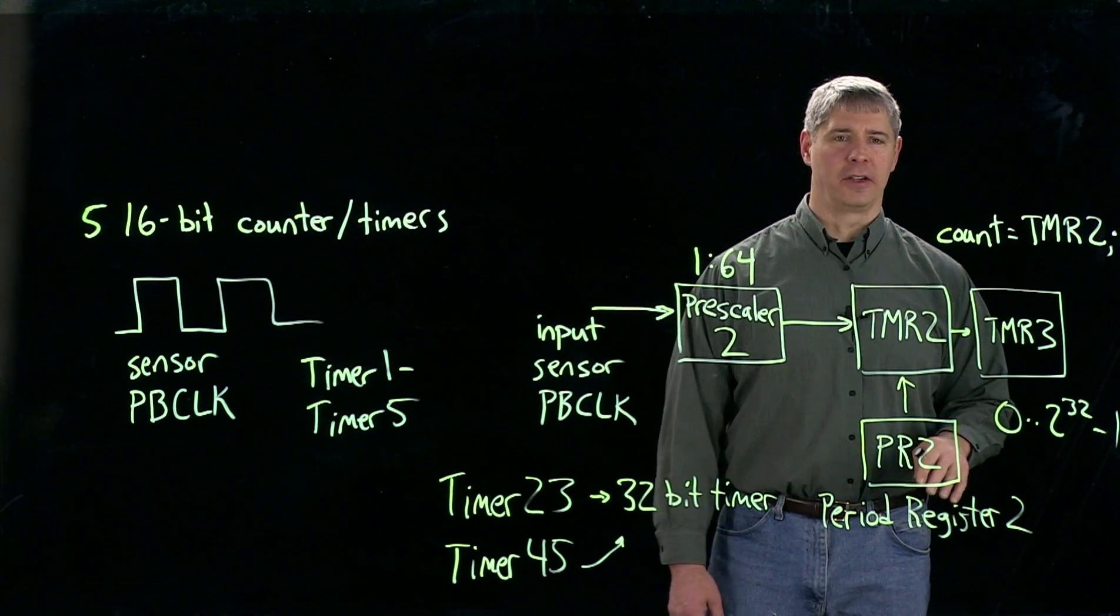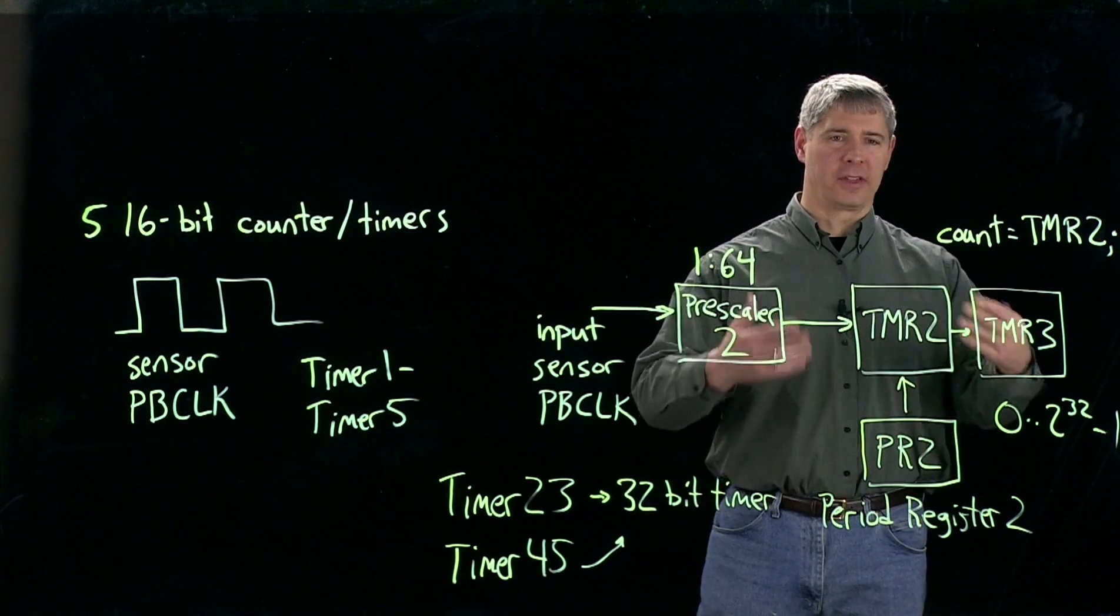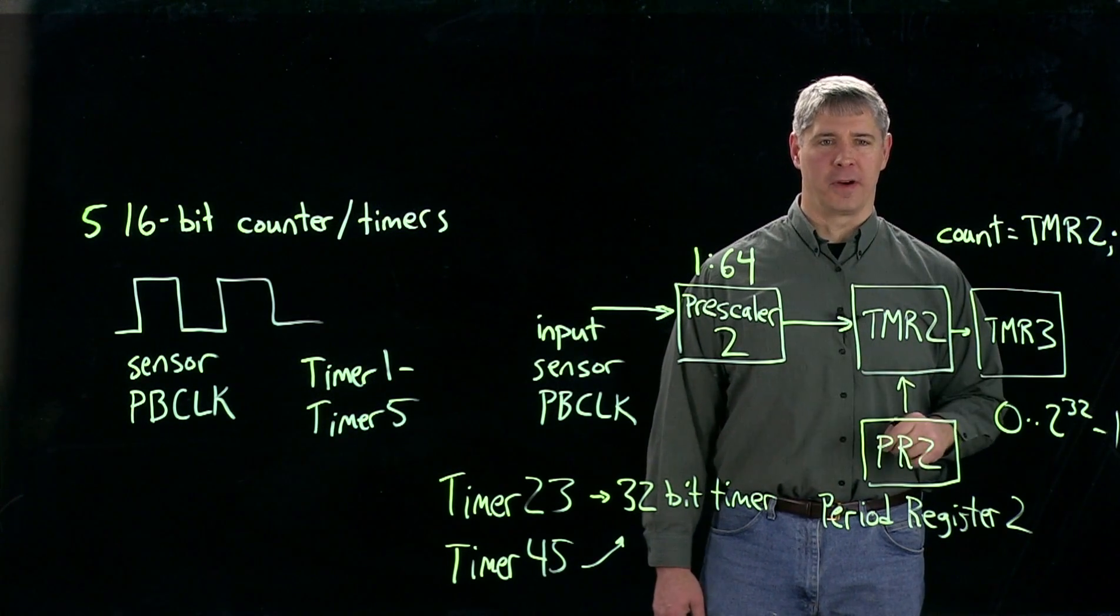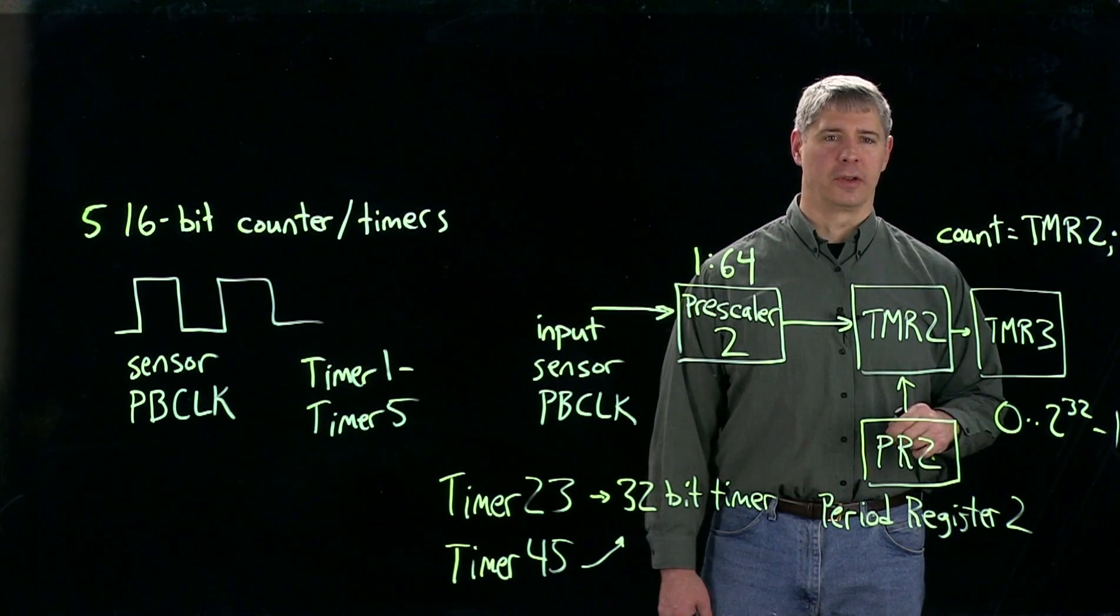If you don't set this value, then it's always going to count to the maximum number and then roll over after that. We'll talk next more about the special function registers used to control the timers.